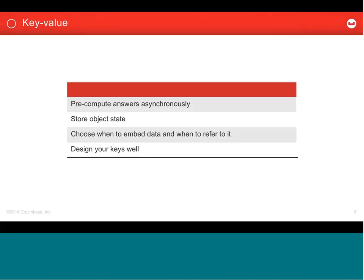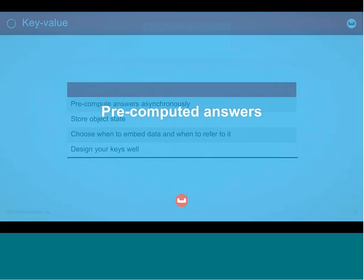You're storing object states. There are two things you need to work out to be as optimal as possible: choosing when to embed data all in one big document versus when to refer to other documents — much the same way as we would refer to other rows and tables in a relational database. And then the last thing is you need to design your keys well.